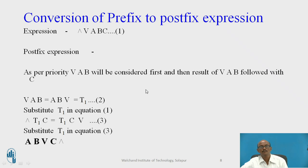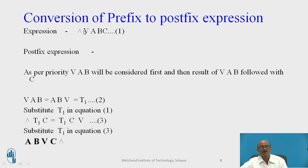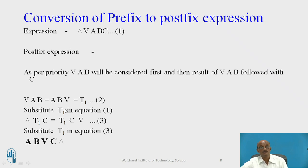Now, conversion of prefix to postfix: consider the expression AND OR A B C — call this equation number one. As per priority, OR will be evaluated first. For prefix, find out the rightmost operator; the rightmost operator here is OR. The two operands to the right of this operator are A and B. Perform the indicated operation: OR A B converts to postfix as A B OR, call that T1.